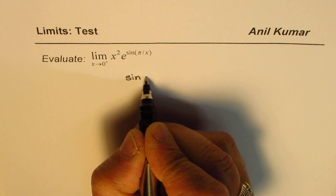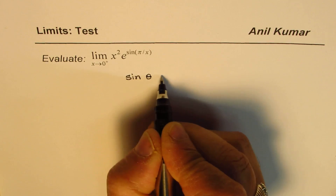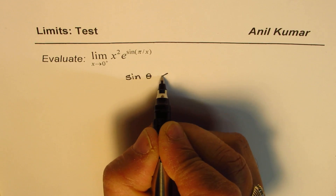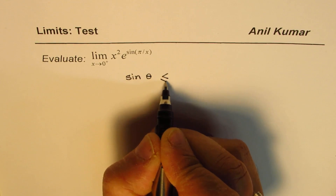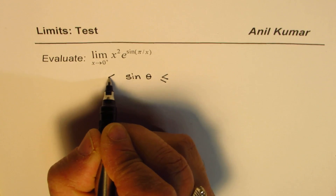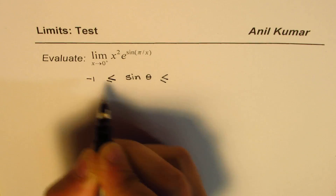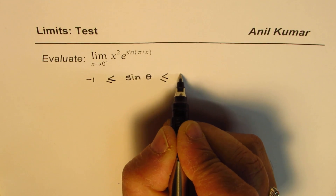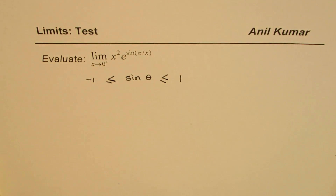So let's say sine theta in general. The value of sine theta is always between minus 1 and plus 1. That is what its range is. So the value of sine theta cannot be beyond this.